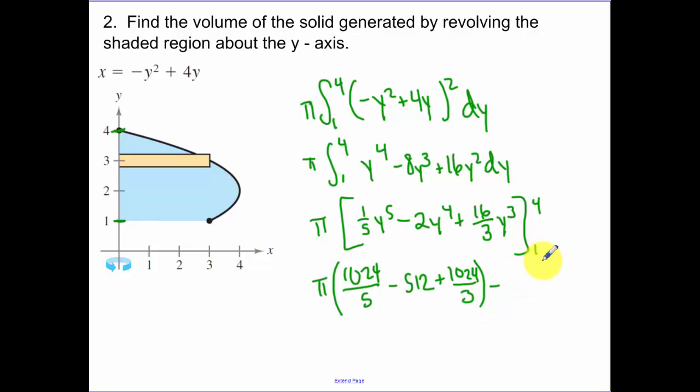And then plugging in 1, it's not 0 anymore. So when we plug in 1, what do I get? I get 1 fifth minus 2 plus 16 over 3. So when I simplify that, I get 153 pi over 5.